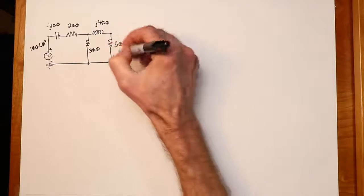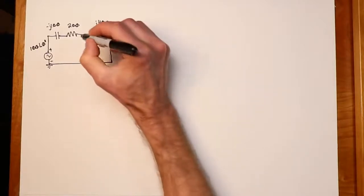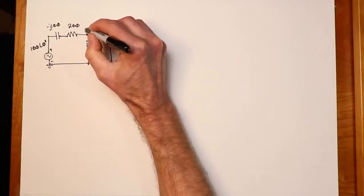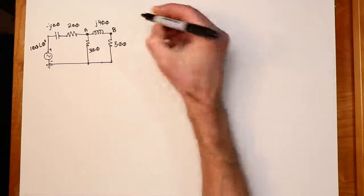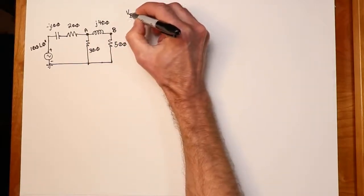We'll say the voltage source over here is 100 volts at an angle of zero degrees. So what we want to do is find the voltage across this 500. I'm going to call this point A, node A, and this node B. So really what we're asking is, what is VB?